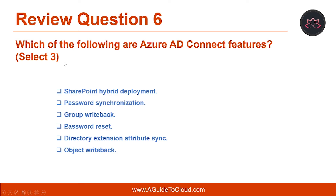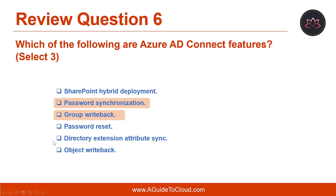The last question is: which of the following are Azure AD Connect features? You need to select three answers. The correct answers are password synchronization, group write-back, and directory extension attribute sync.